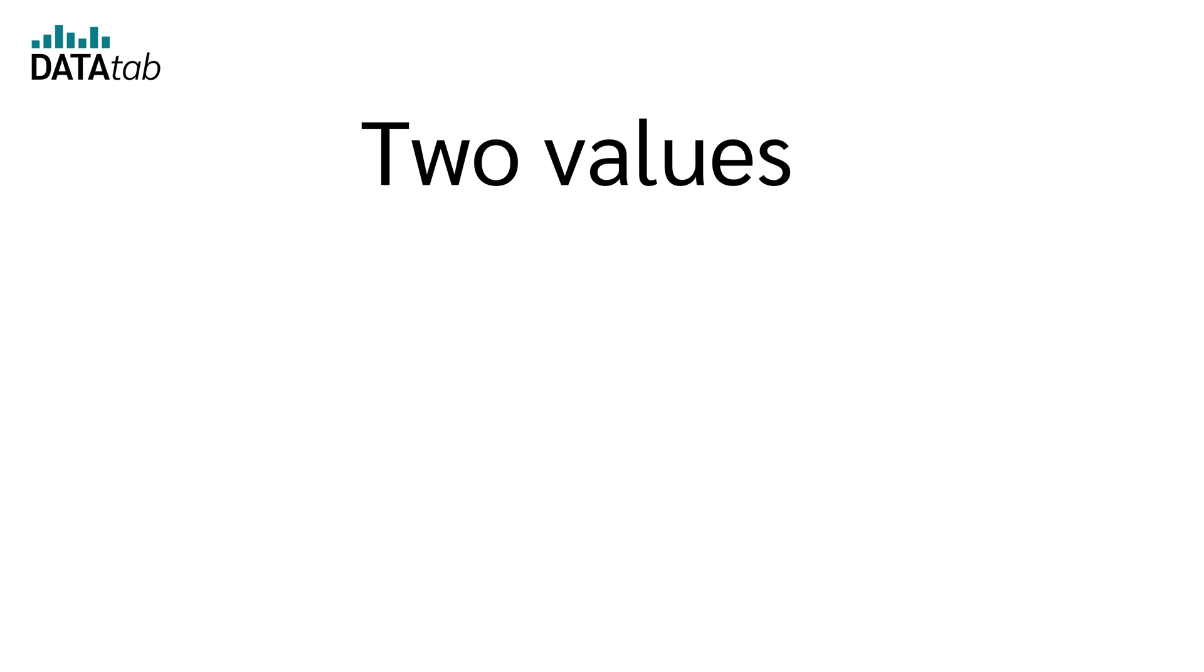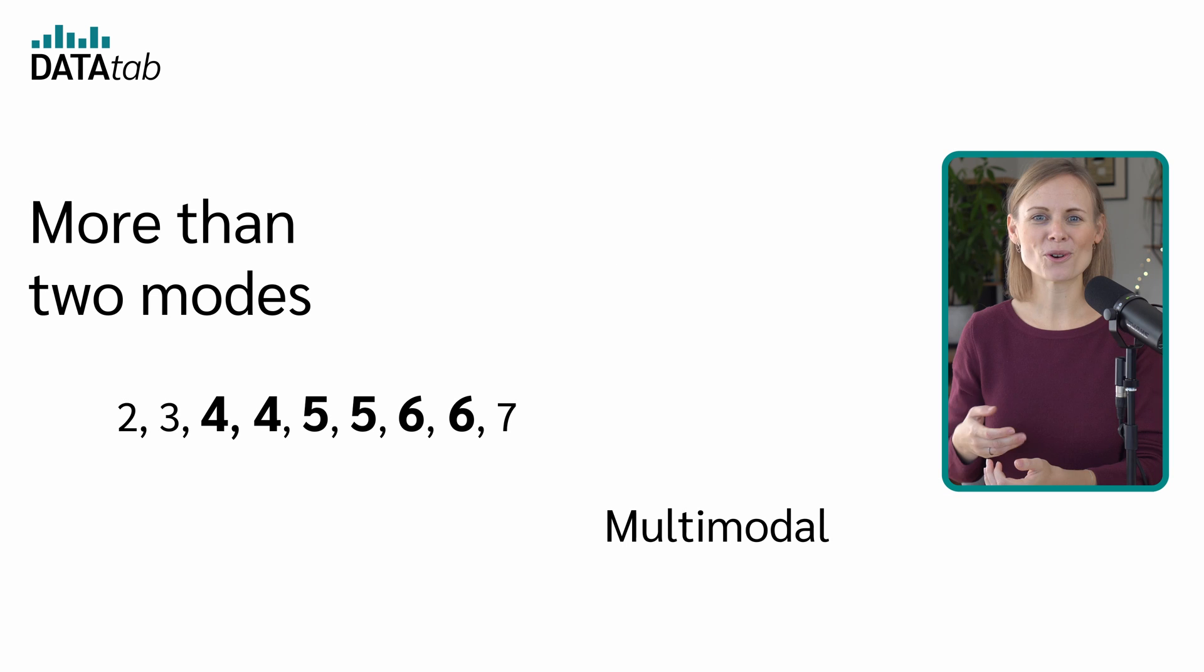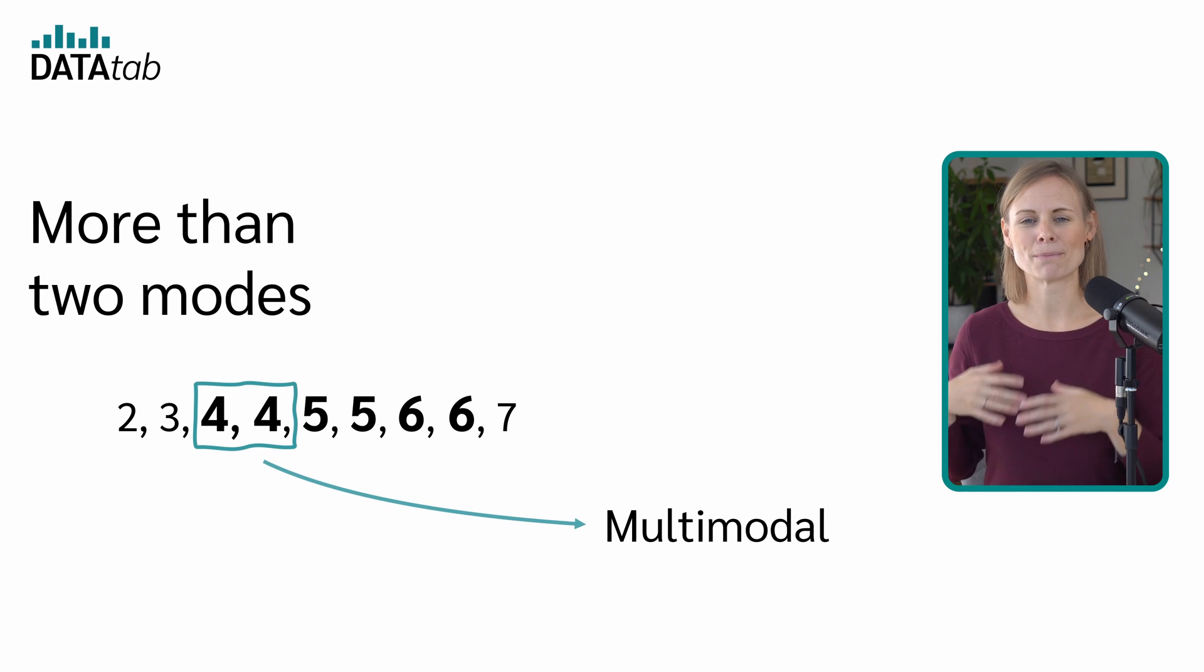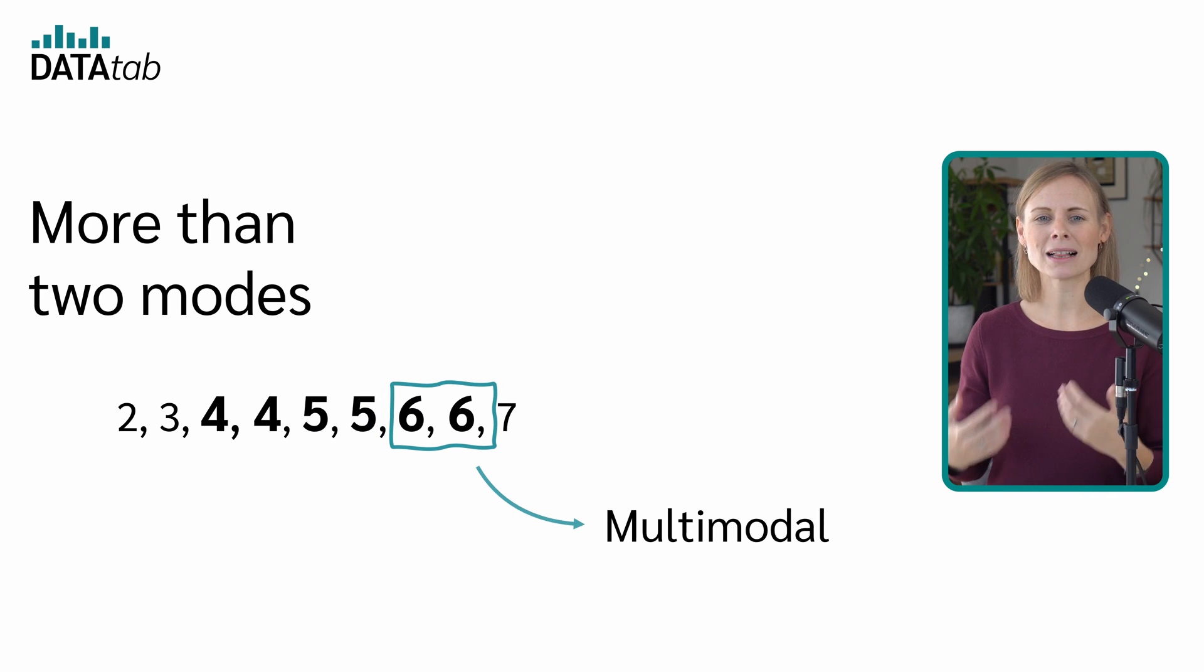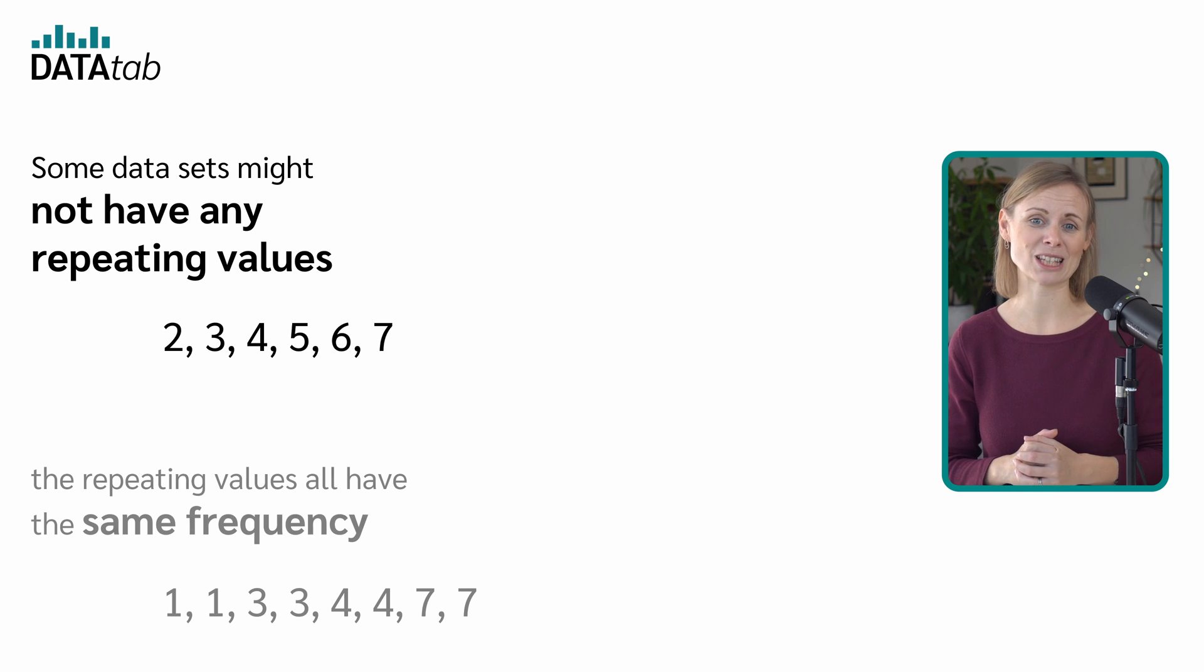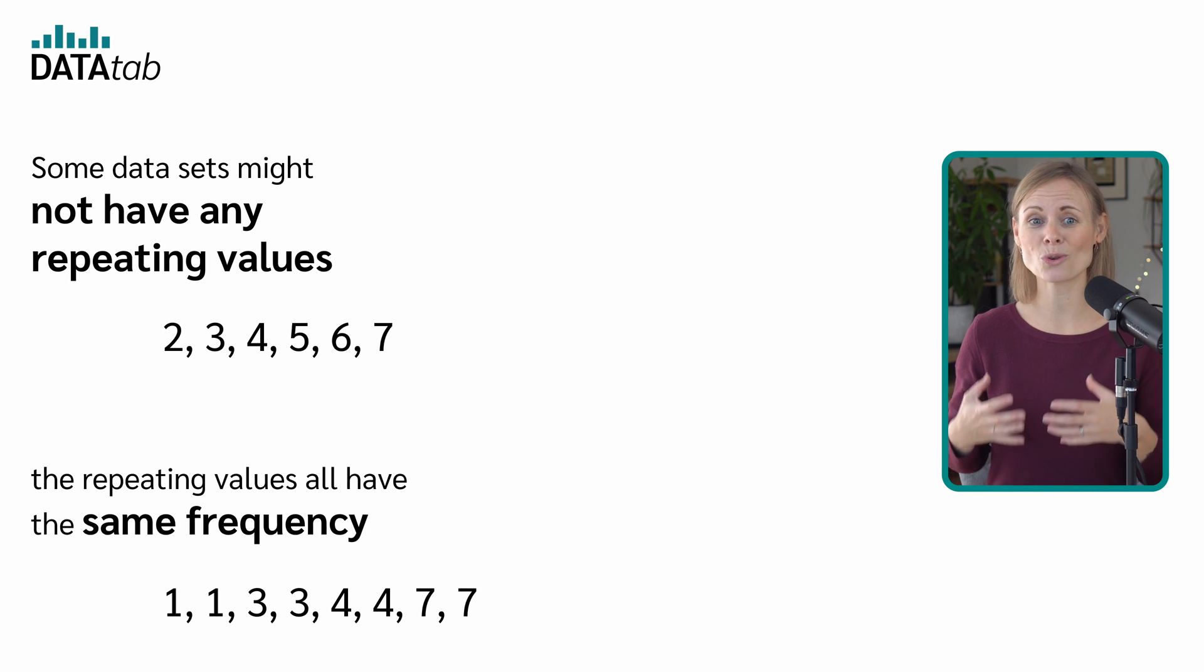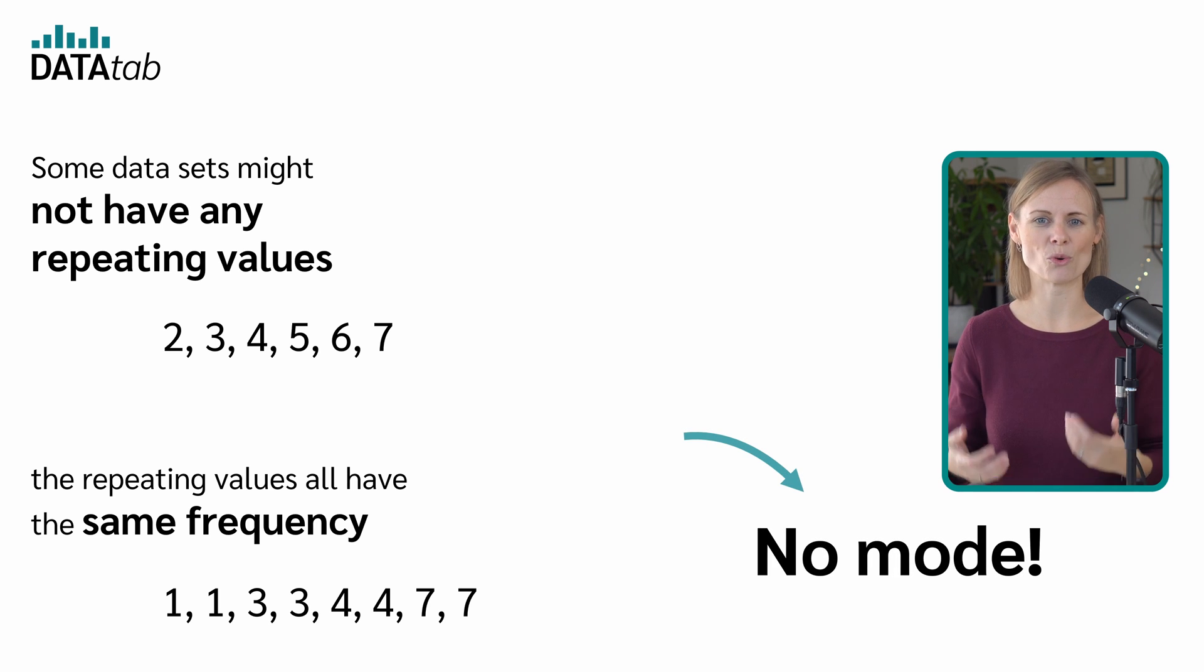If a data set has two values that appear most frequently, it has two modes and is called bimodal. For instance, in this data set the modes are four and five. Of course, a data set can also have more than two modes. If it has multiple values that appear most frequently, it is termed multimodal. And some data sets might not have any repeating values or the repeating values all have the same frequency. In such cases, the data set has no mode.